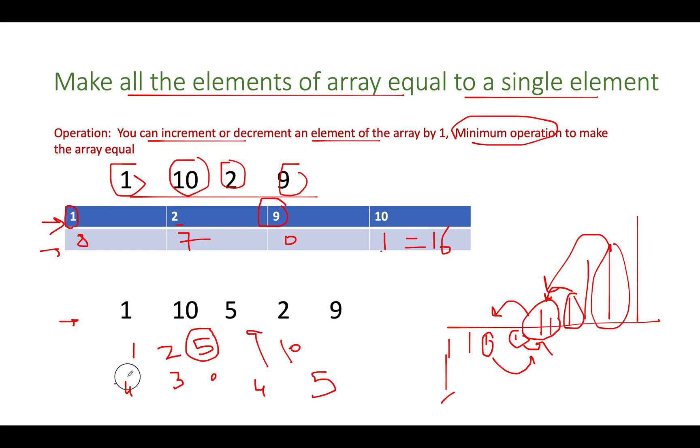So what is the total sum of these elements? 4 plus 3 is 7. 7 plus 4 is 11. 11 plus 5 is 16. So the answer again is 16. Now the problem reduces to identifying the middle element out of the input array. There are two approaches of doing it.